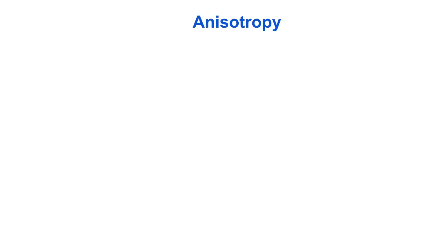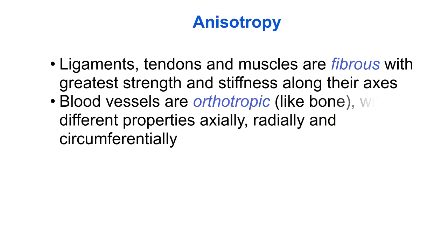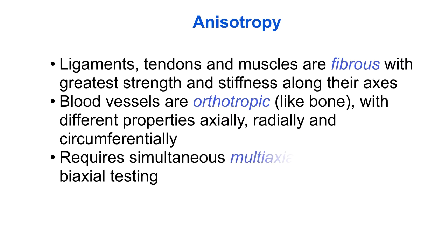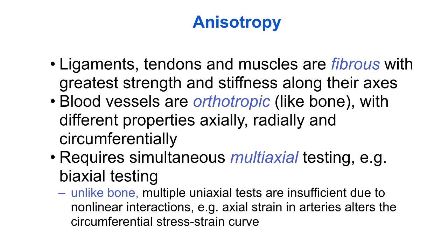Another important property of soft tissues is anisotropy. Ligaments, tendons and muscles are fibrous with greater strength and stiffness along their axes. Blood vessels, on the other hand, are orthotropic, like bone, where the properties differ axially, radially and circumferentially. Anisotropy necessitates simultaneous multi-axial loading, such as biaxial testing. This is different from bone, where we were able to simply perform separate uniaxial tests along separate structural axes.